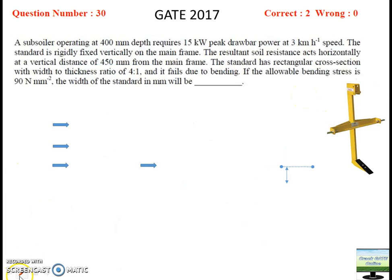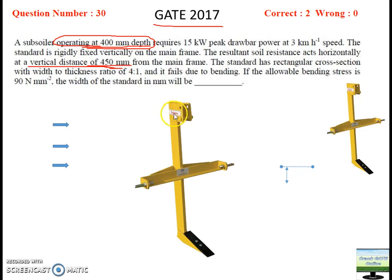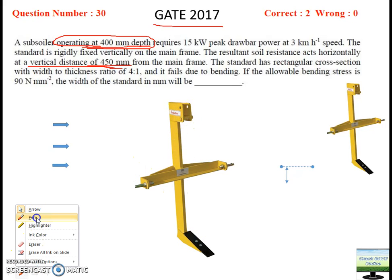Let's move towards the 2017 question. Pause the video and read the question first. Here information has been given: the vertical distance where the bending force is acting is 450 mm. The 400 mm value is not required and will not be used for calculating anywhere. This is your subsoiler, and the cross section of this subsoiler will show your depth and your width.